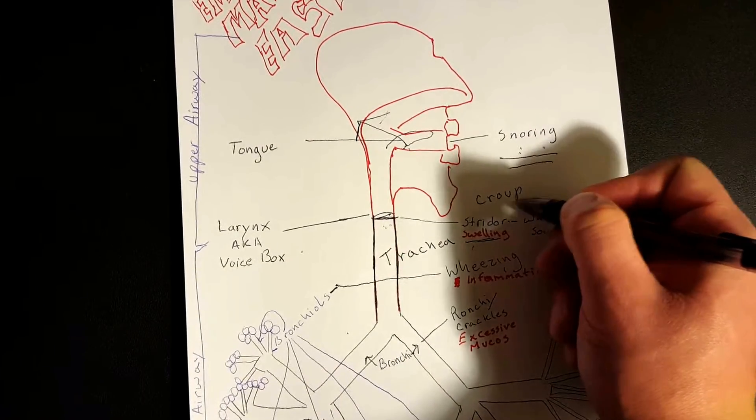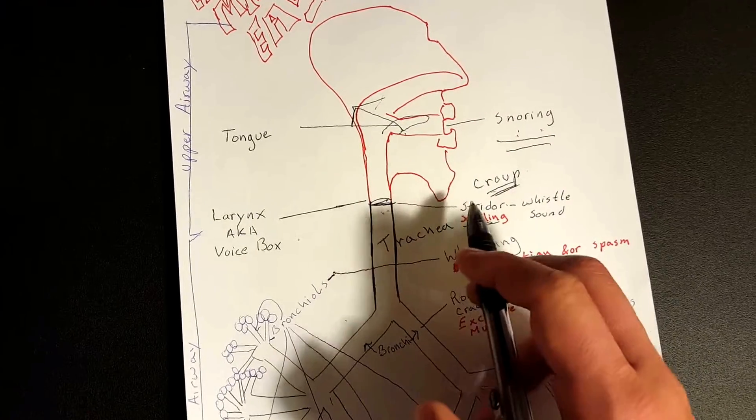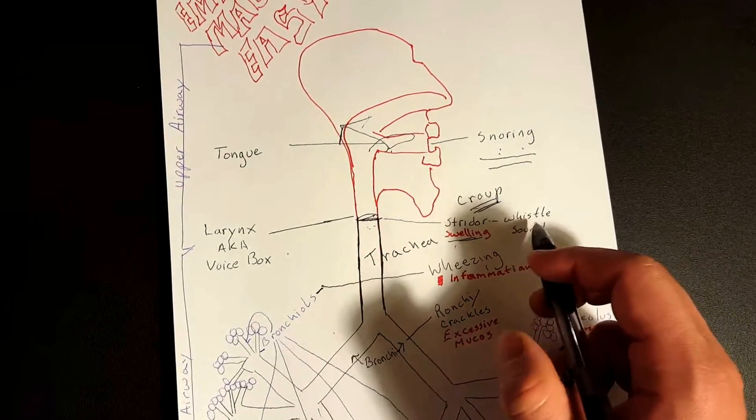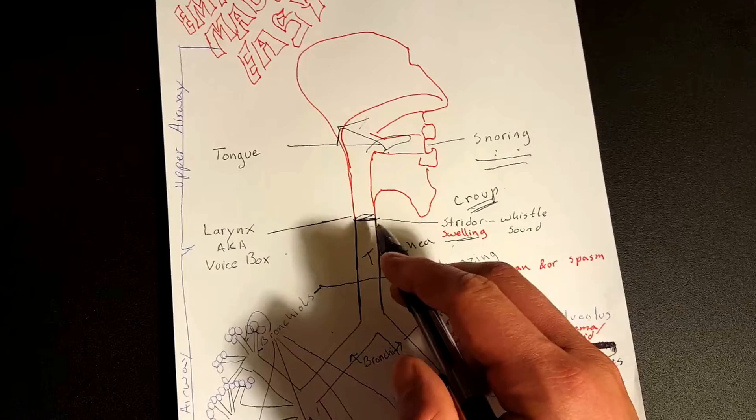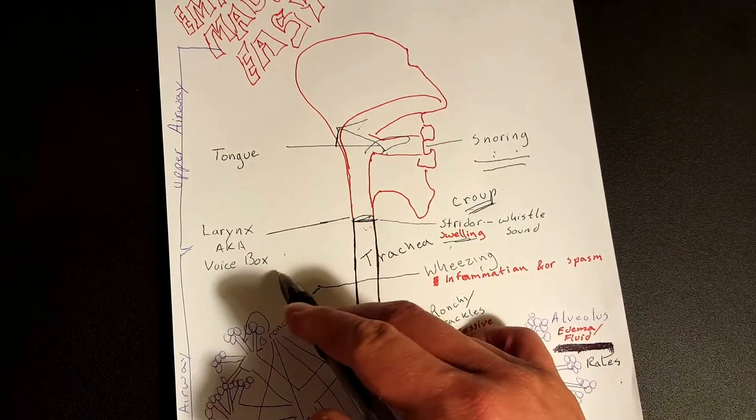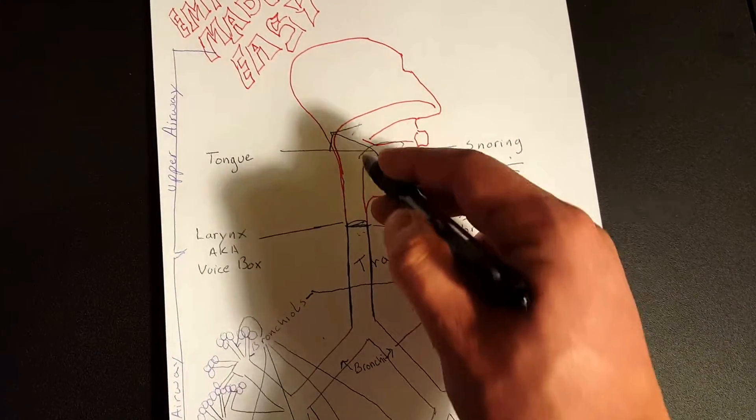All right, but most of those will have a stridor sound. It's a whistling sound and that's in the larynx, aka the voice box. All right, this is all upper airway. That's pretty much it for upper airway as far as that goes.